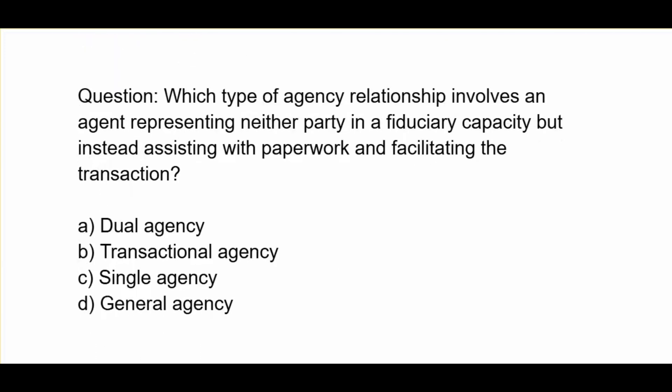Which type of agency relationship involves an agent representing neither party in a fiduciary capacity, but instead assisting with paperwork and facilitating the transaction? A. Dual agency. B. Transactional agency. C. Single agency. D. General agency.